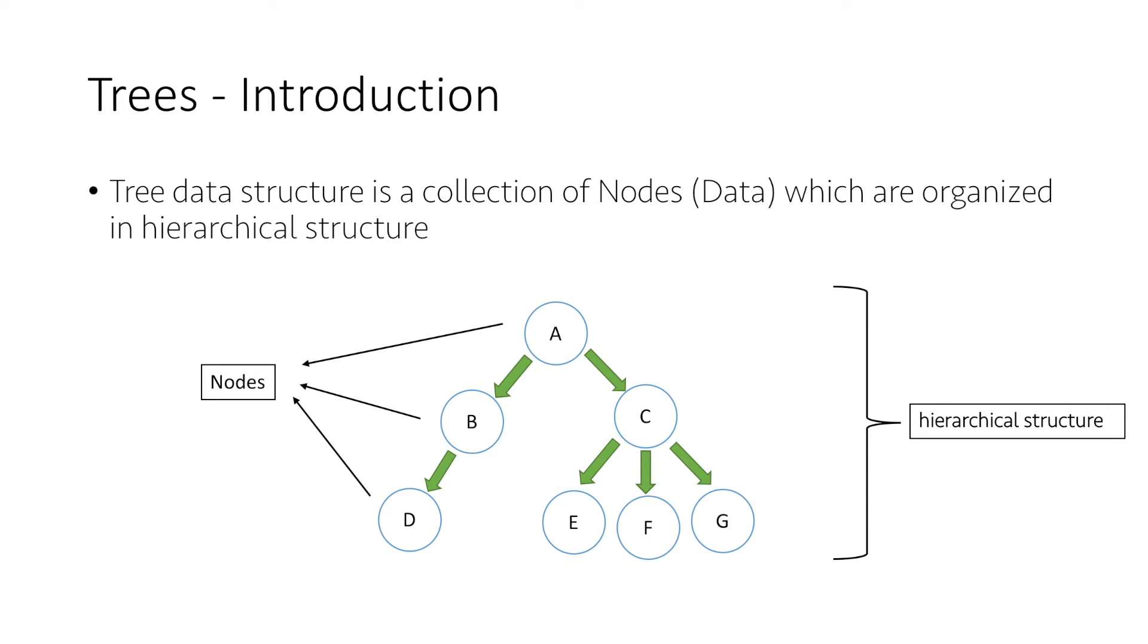are English alphabets A, B, C, D, E, F, G, and all the arrows connecting these nodes are called edges.